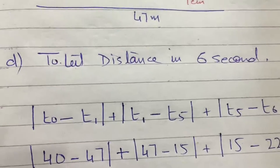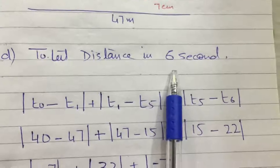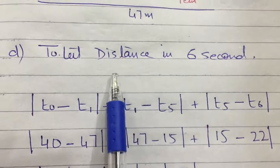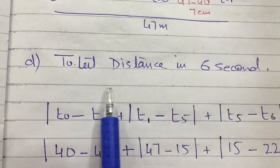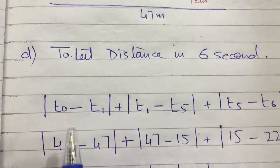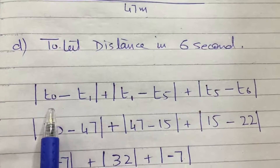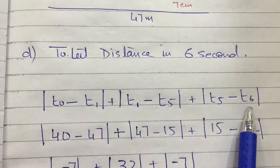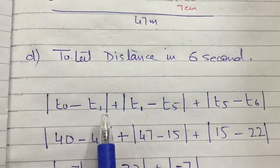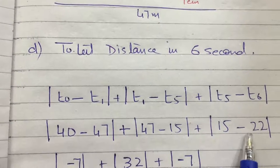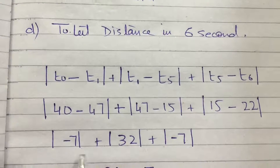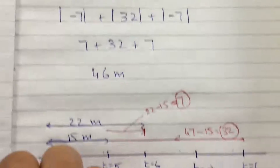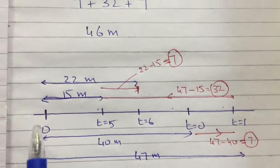In part D, find the total distance over 6 seconds. Before 6 seconds there were two instants when the object was turning: at t equals 1 second and t equals 5 seconds. So I find the distance covered in three intervals: from start to 1 second, from 1 second to 5 seconds, and from 5 seconds to 6 seconds. I plug in these timings into the displacement equation and got a total of 46 meters.